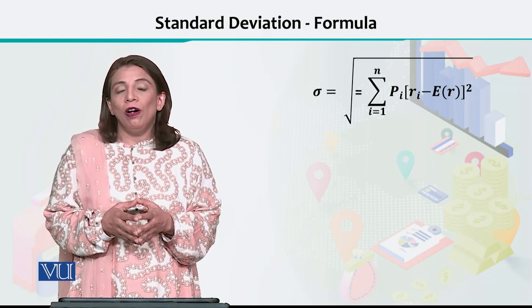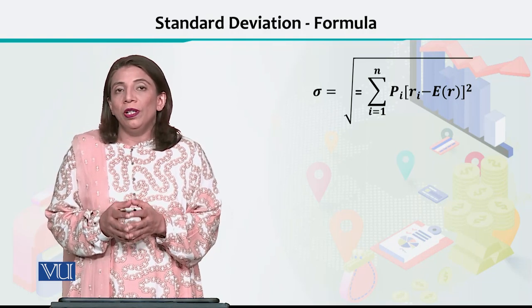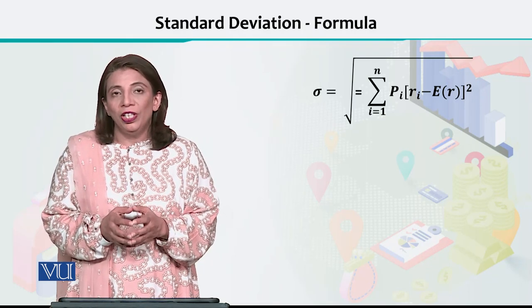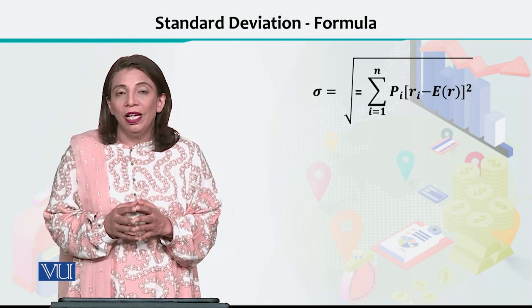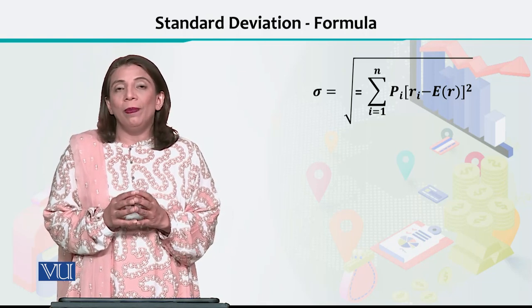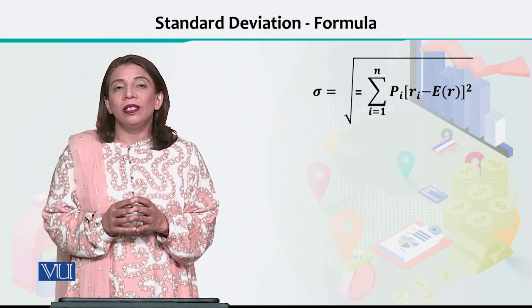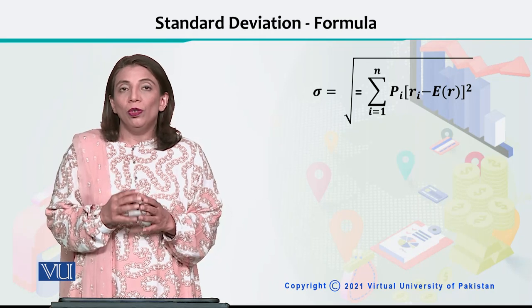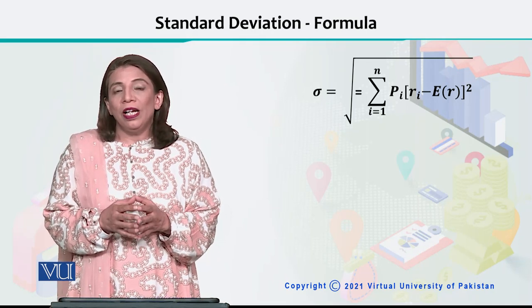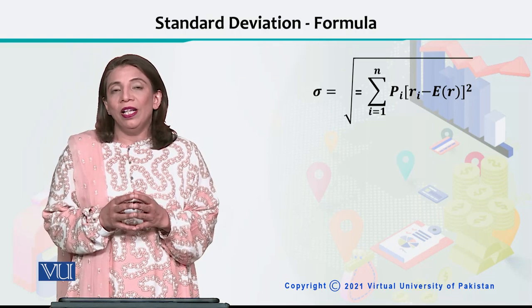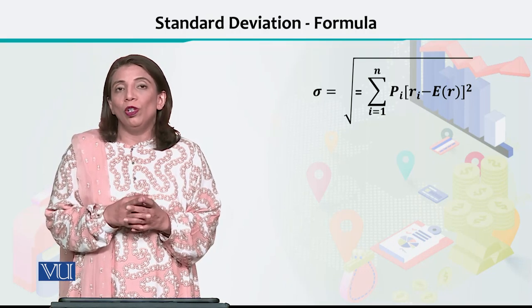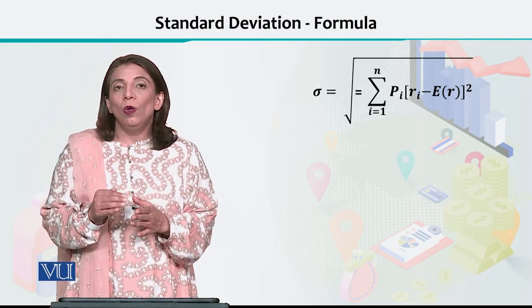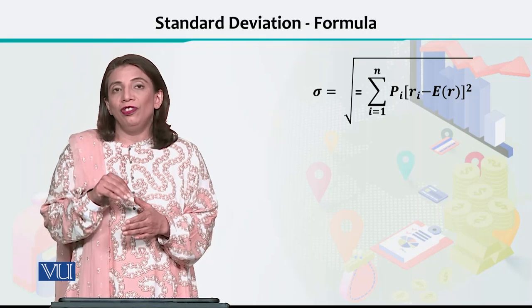After calculating the variance of expected rate of return, you take the square root, and then you get the standard deviation value represented by sigma. This value tells you the risk attached with that particular financial instrument. We calculate standard deviation because it tells you about the overall spread, dispersion, or the risk associated with a certain stock or financial instrument.